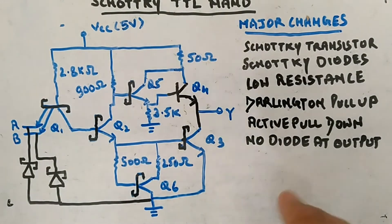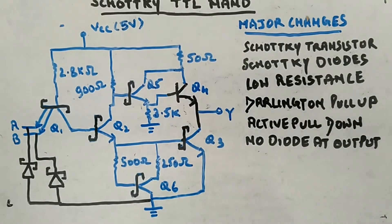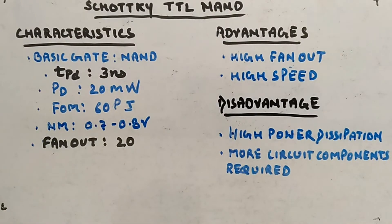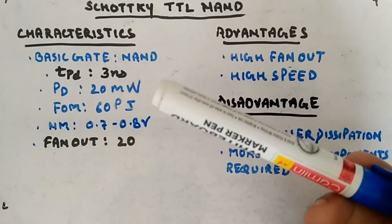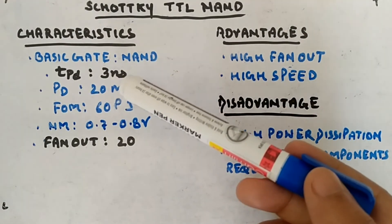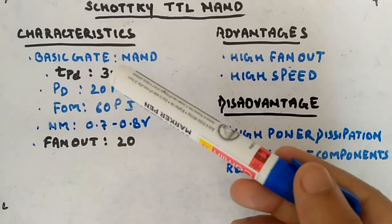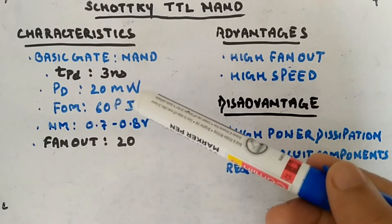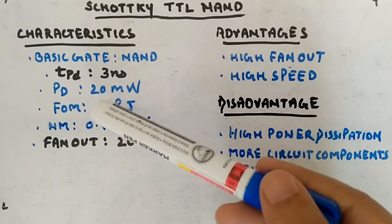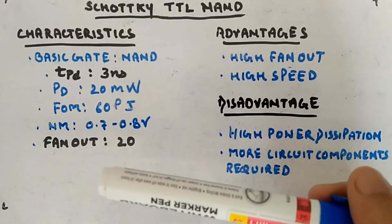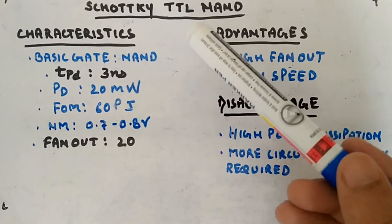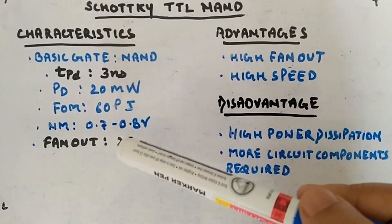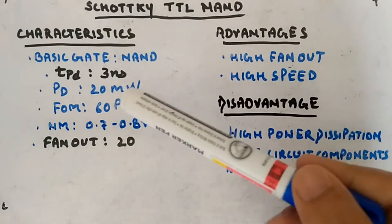Hopefully you have understood how the circuit is working. The characteristics of Schottky TTL NAND gate: basic gate is a NAND gate again. Main advantage is propagation delay is very low — about 2 to 3 nanoseconds — which makes it very high speed. Power dissipation is 20 milliwatts, which is high power dissipation, so the power-delay product is around 60 picojoules, which is not good. Noise margin will be around 0.7 to 0.8 volts. Fan-out is another benefit of Schottky TTL — around 20.